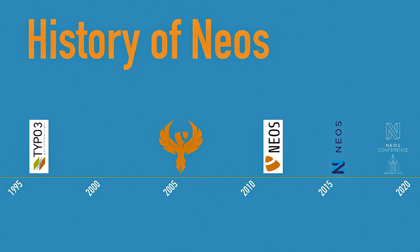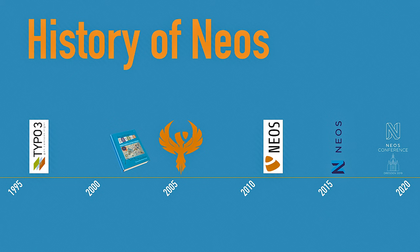As Robert already said in the keynote, 2006 marks the birth of NEOS with the decision to reinvent our CMS on a green field with the latest technology. Back then it was the code name Phoenix. That was 2005, and just a couple of years before that, Eric Evans released his famous blue book and coined the term domain-driven design. It was clear to us from the beginning that this is something we wanted to adopt as one of those new methodologies to follow.